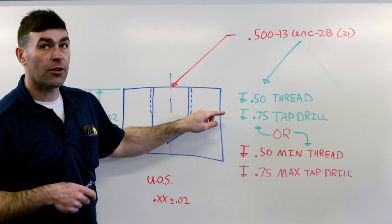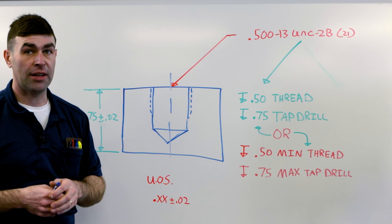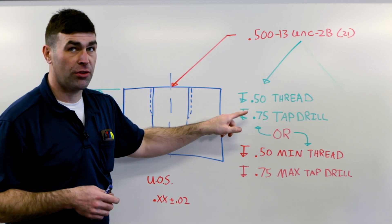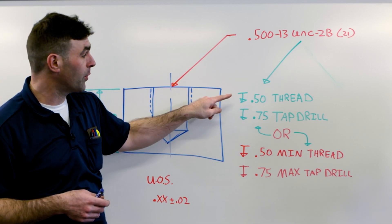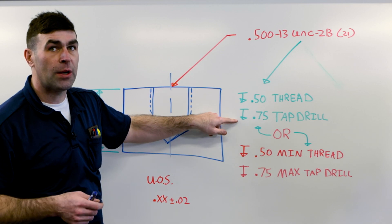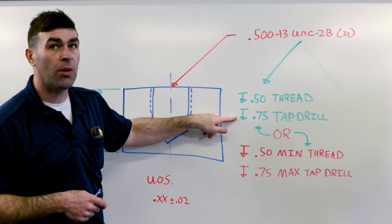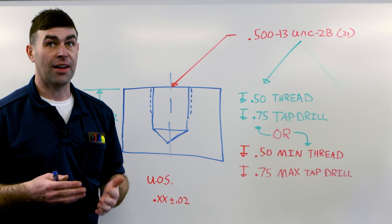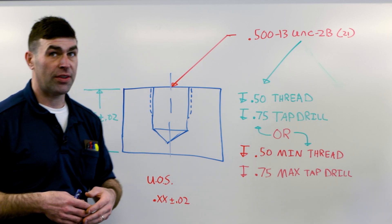The first way I've shown it, there is no tolerance given with the information. So we're saying half inch for the full thread, 0.75 or three quarter inch for the tap drill. In order to get a tolerance for that, and yes it does have a tolerance, all dimensions have a tolerance.